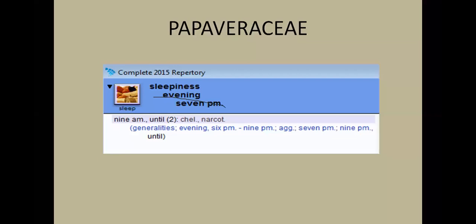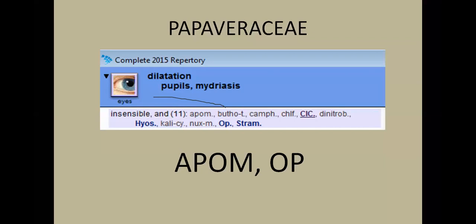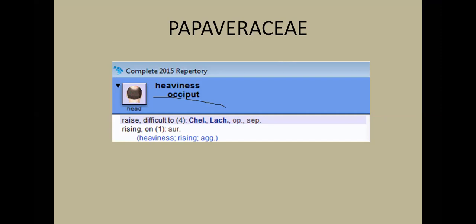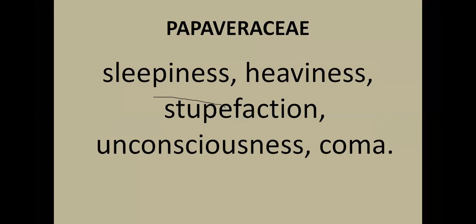What can we learn from all these rubrics? Going over them: sleepiness, stupefaction, faintness, insensibility, contentedness with forgetting of pains, difficulty raising the head, and overpowering sleep. These rubrics all have very few remedies, and the main ones are from Papaveraceae. We can deduce that the main theme coming again and again is sleepiness, heaviness, stupefaction, unconsciousness, and coma. This is one side of the Papaveraceae story.